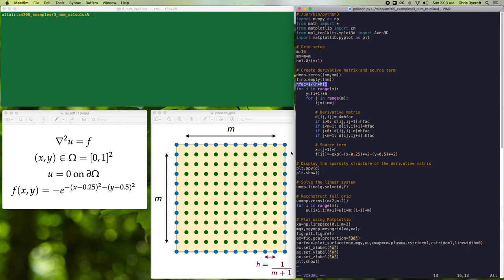If those neighbors are on the boundary corresponding to blue grid points, then since our solution is 0 there, then we can just omit any contribution to the derivative matrix from those points. We'll then compute the corresponding entry of the source term vector. We'll then plot the sparsity structure of the derivative matrix, and we'll then solve the linear system to find our solution u.